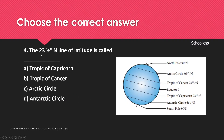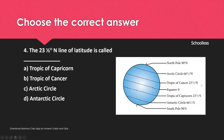The 23 and a half degree north line of latitude is called the Tropic of Cancer. So option B is the correct answer. The 180 degree line of longitude is the International Date Line.